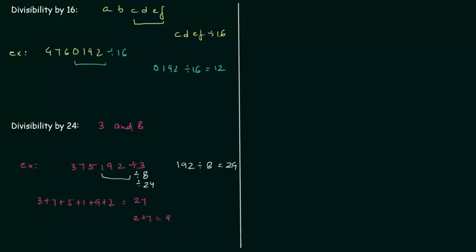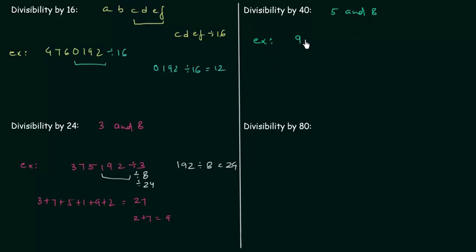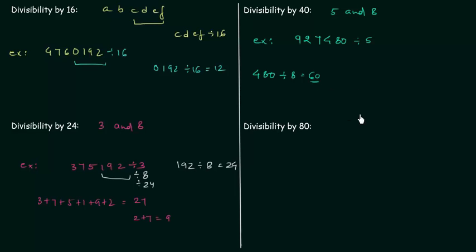The next divisibility rule to study is divisibility by 40. A number is said to be divisible by 40 if it is divisible by both 5 and 8. For example, the number 927480: for divisibility by 5 we consider the units place, which is 0, so this number is divisible by 5. For divisibility by 8 we consider the last 3 digits, 480. 480 is divisible by 8 and gives 60. So this number is also divisible by 8, and therefore divisible by 40.